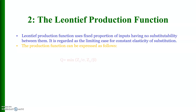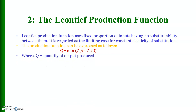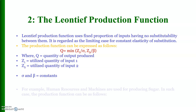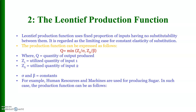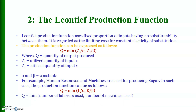The Leontief production function can be expressed as: Q = min(z₁/α, z₂/β), where Q is the quantity of output produced, z₁ is the quantity of input 1, z₂ is the quantity of input 2, and alpha and beta are constants. For example, if human resources and machines are used for producing sugar, the function can be written as Q = min(Labour/α, Capital/β), representing the minimum number of labourers and machines required for the production of a specific amount of output. The isoquants associated with the Leontief production function are L-shaped.